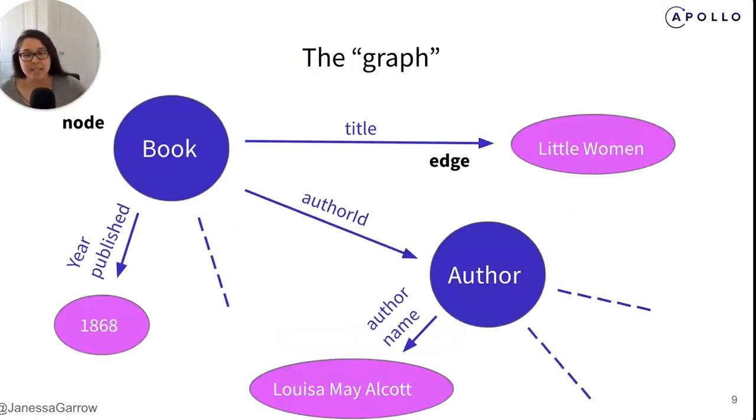When using a schema-first approach and knowing what our client needs are, we can think about our data as a collection of objects like a book and authors, and the relationships between those objects like how books have an author. If we think about each object as a node and each relationship as an edge, we can create a mental picture of our entire data model as a collection of nodes and edges that we call the graph.